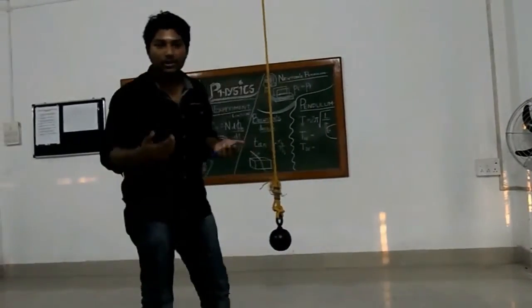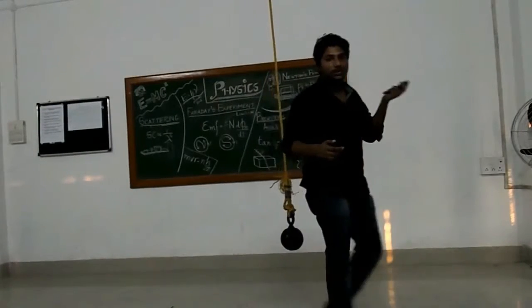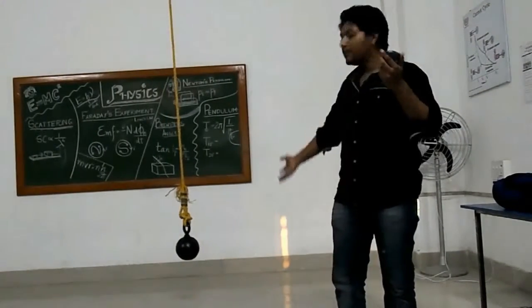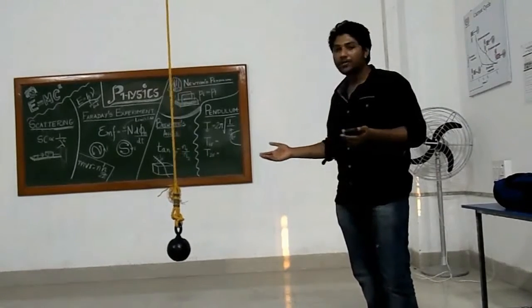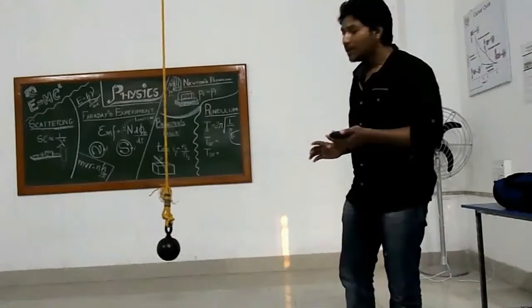The accuracy with which I can use this stopwatch is around 0.1 to 0.2 seconds. So the time period measurement may vary by around 0.01 to 0.2 seconds. Let's start.